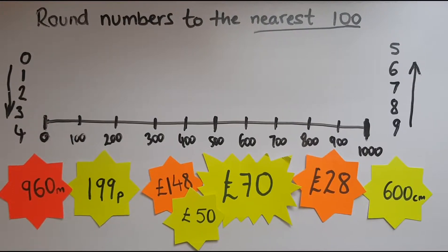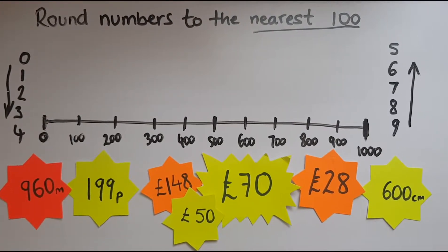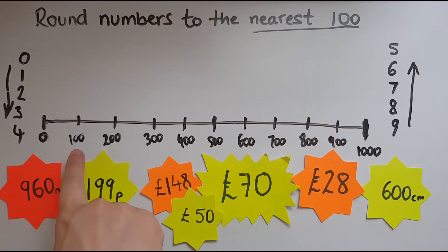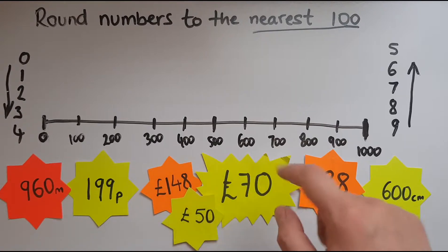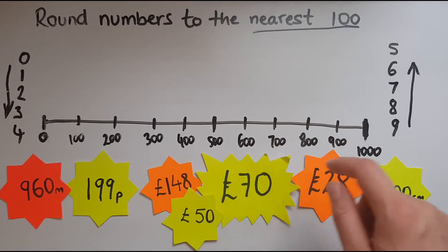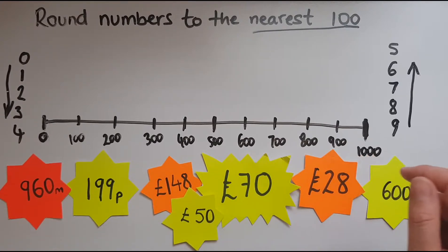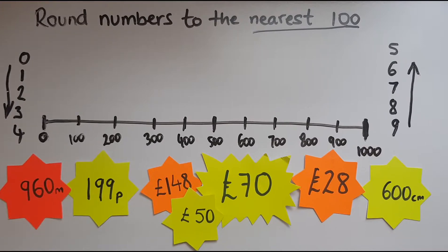Now we'll look at rounding numbers to the nearest hundred. Rounding to the nearest hundred means we're counting up in hundreds like 0, 100, 200, 300, 400, 500, 600, 700, 800, 900 and 1000.